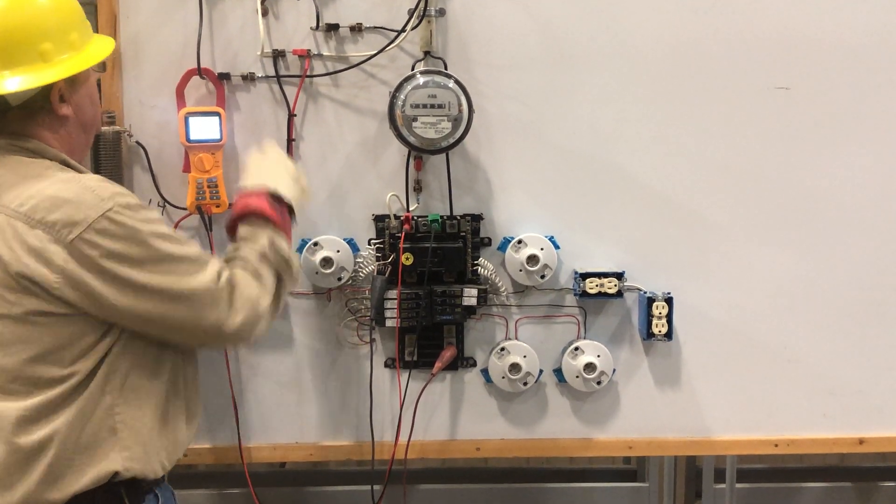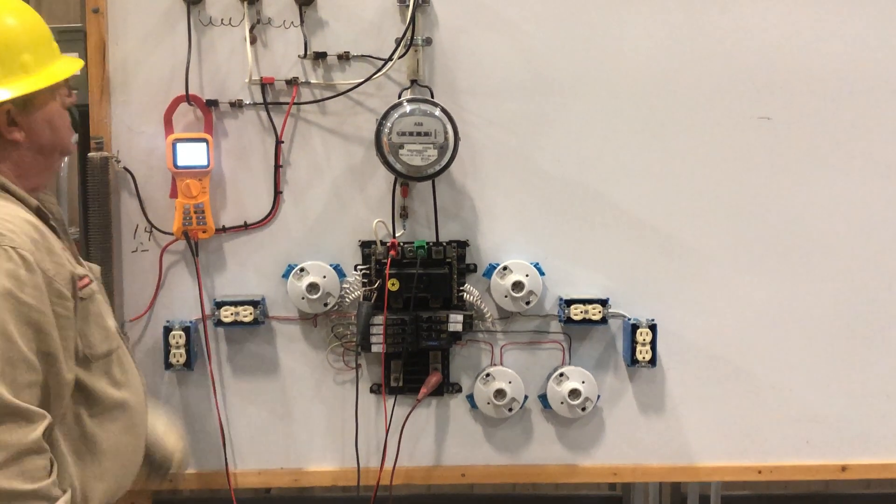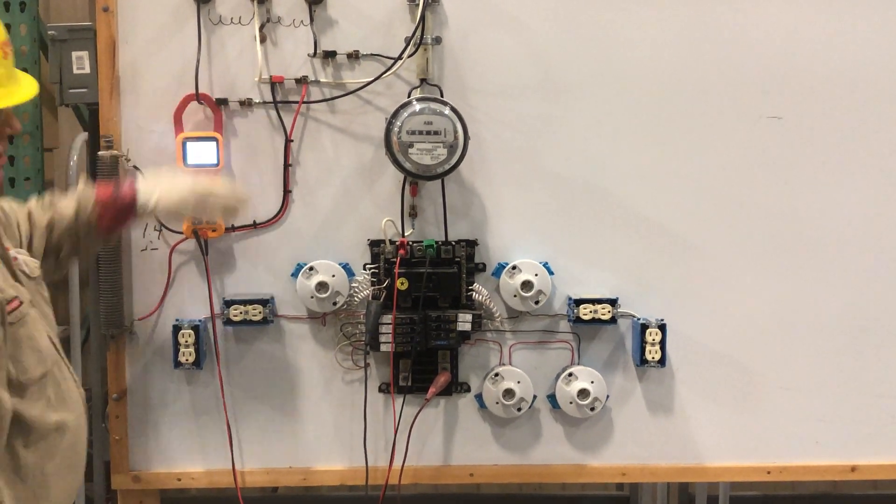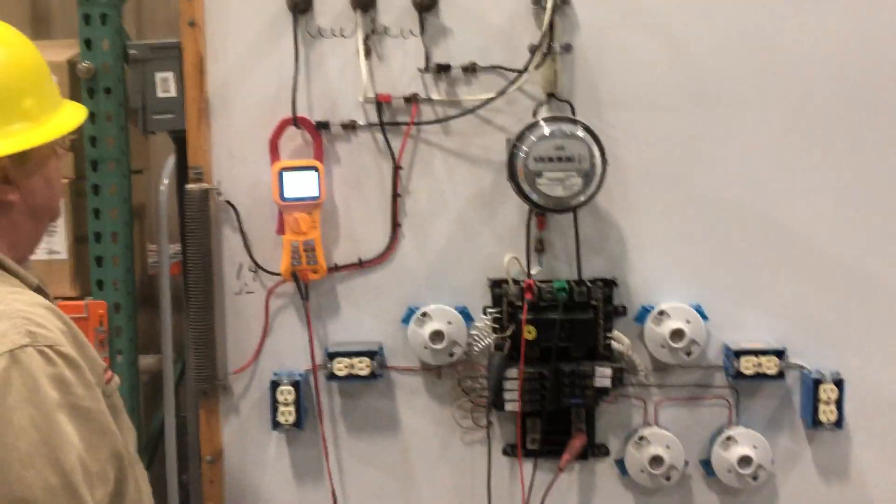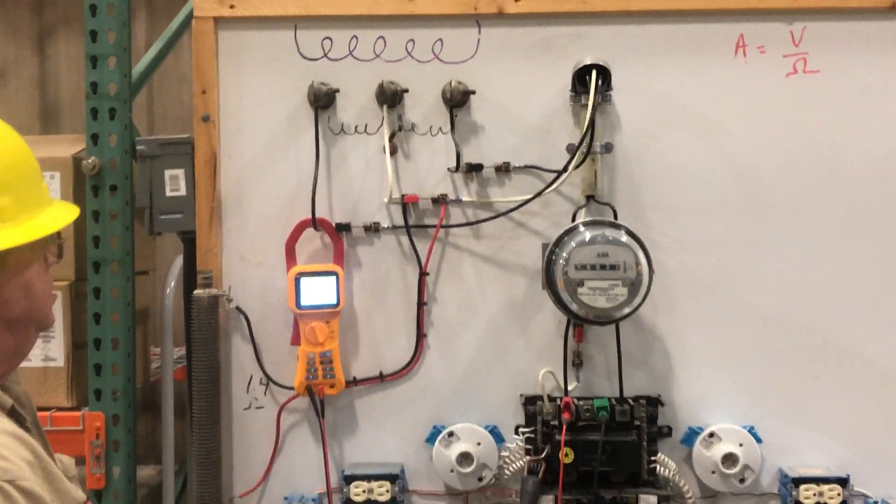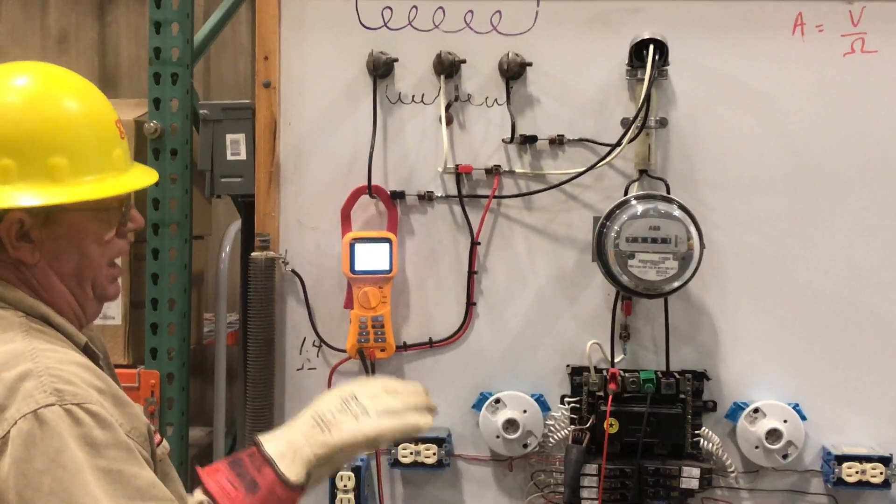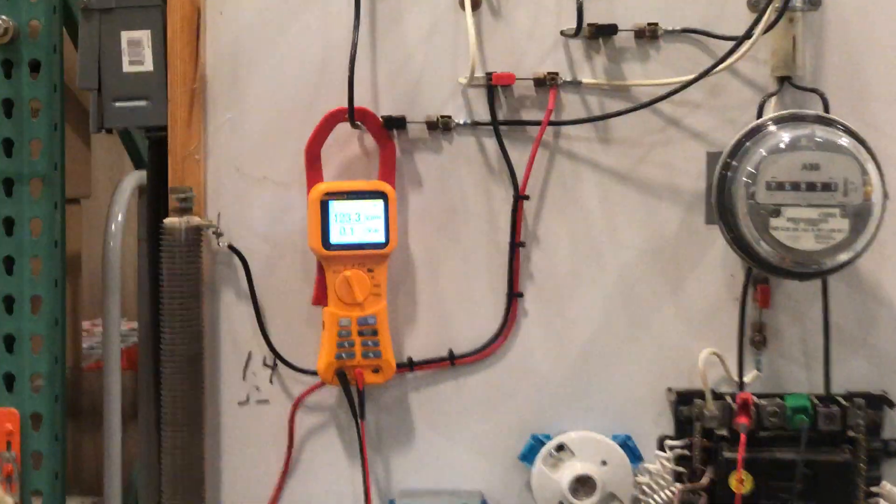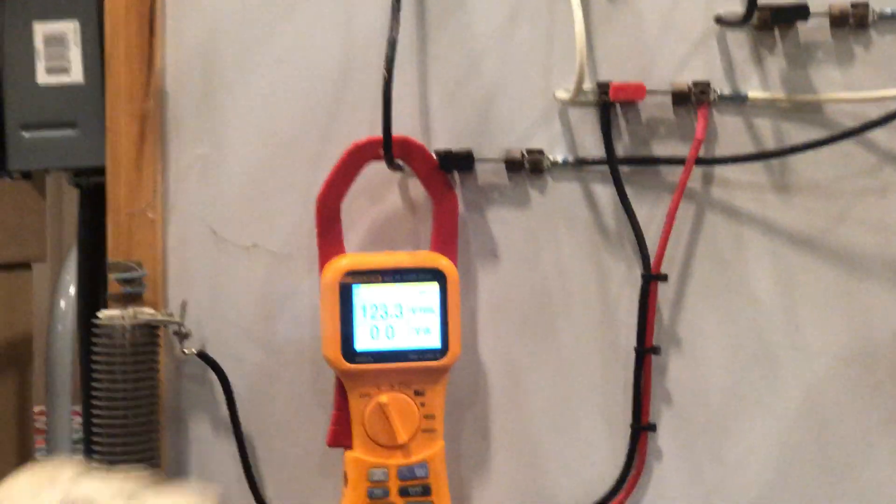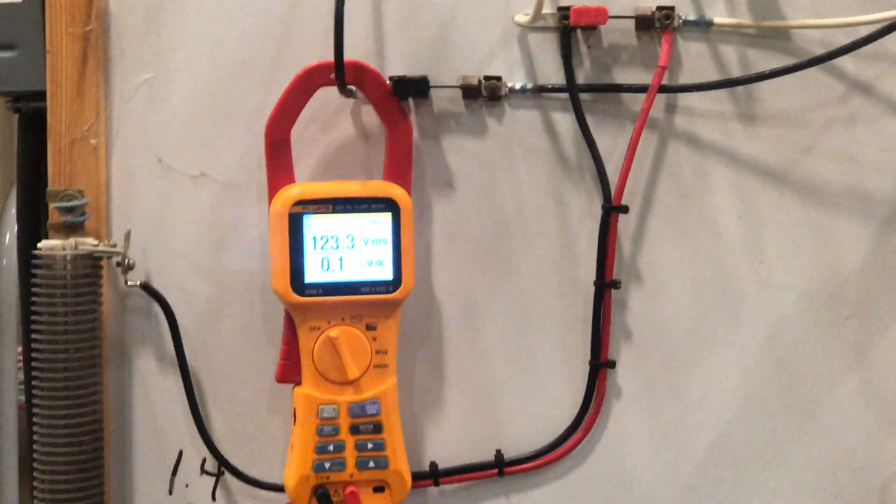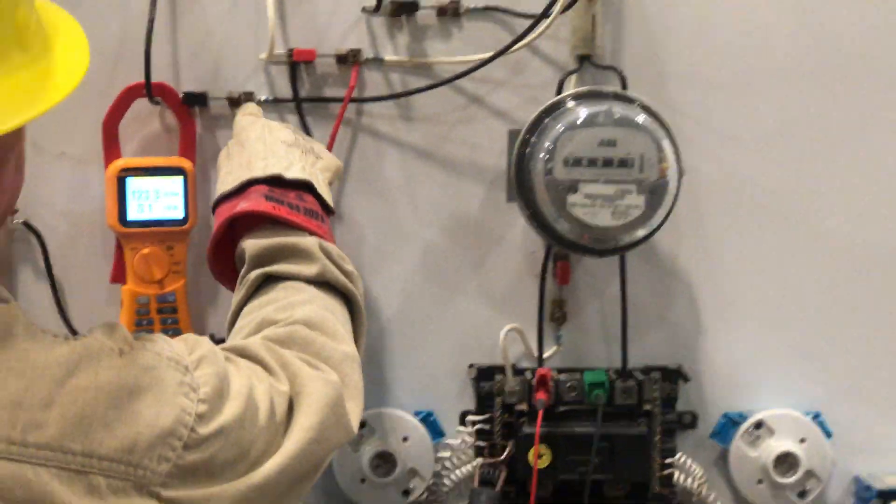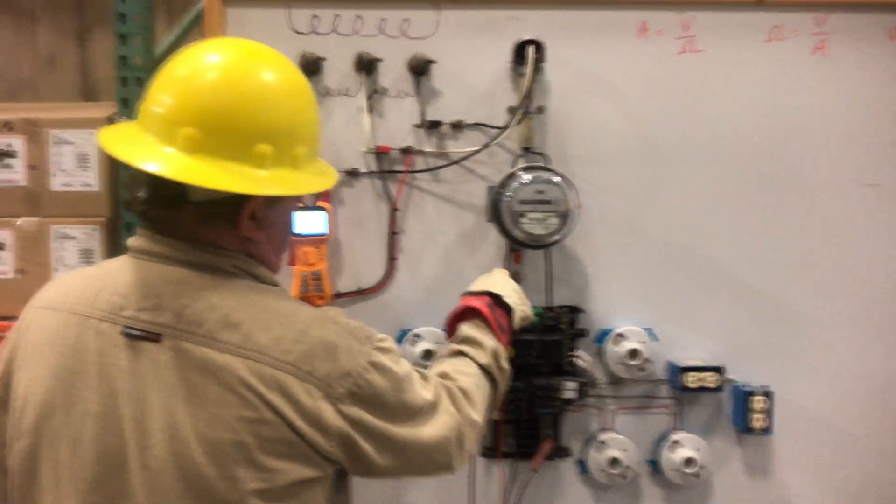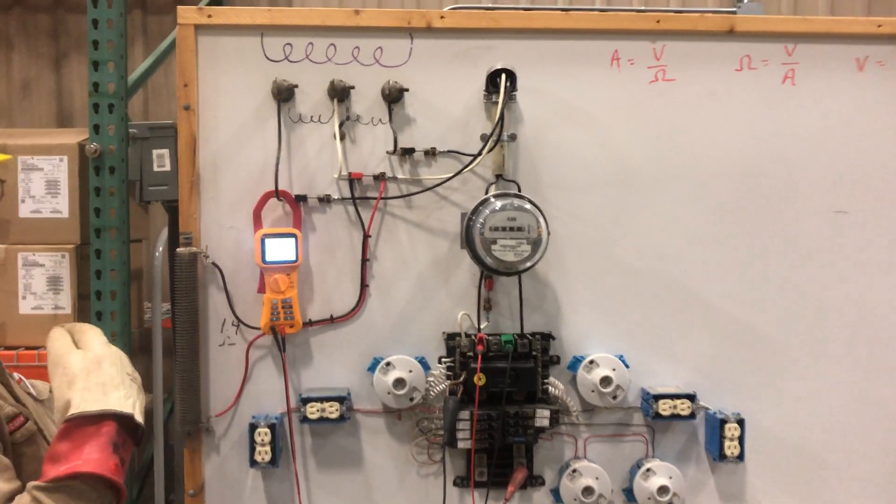Now I'm going to bring on load with the neutral closed. The neutral is in good condition. 121.6, 122.7. And you're watching the loaded leg or the unloaded leg, 123.3. Neutral is in good condition. We added 24 amps and we watched the unloaded leg go to 123.3.